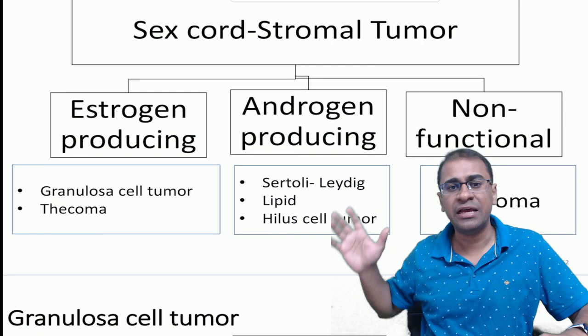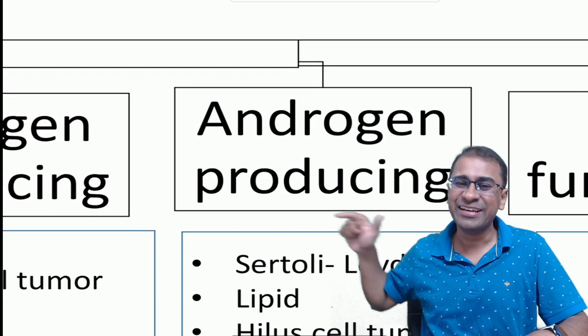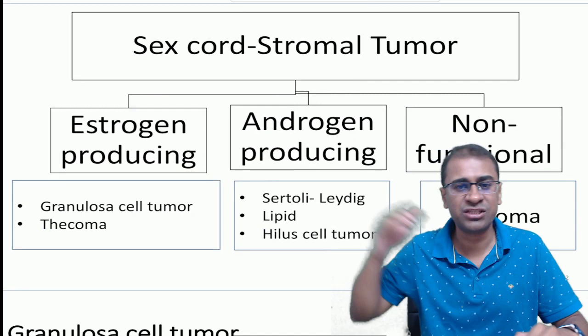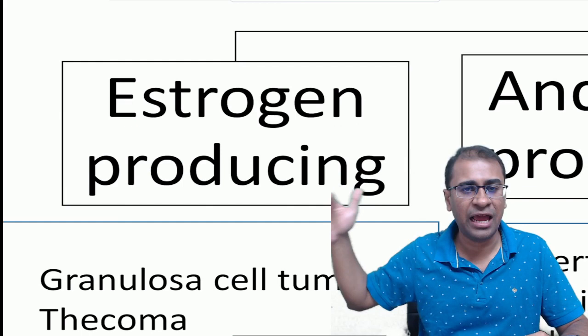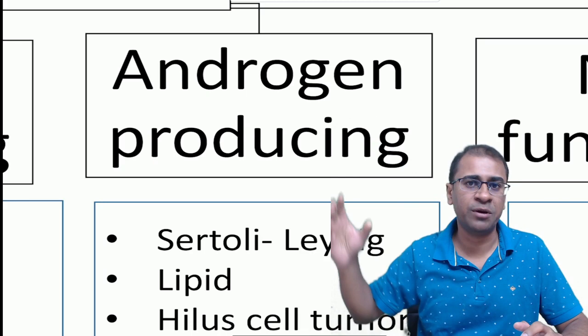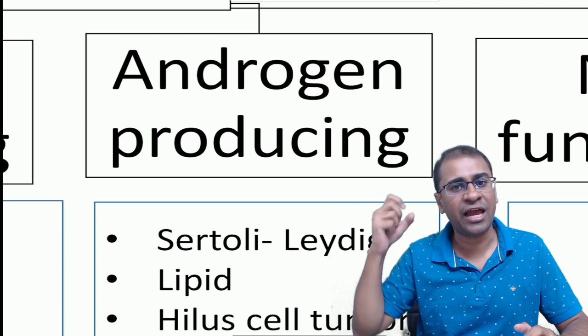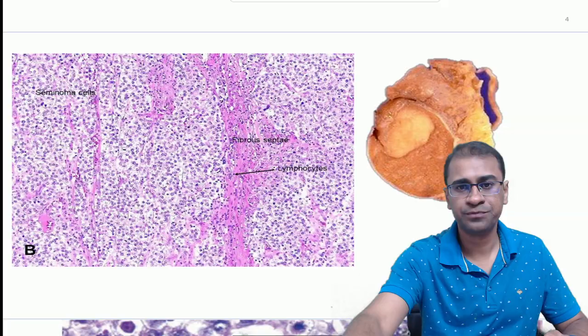The binding feature: estrogen-producing tumors — remember GET — Granulosa cell tumor, thecoma, and Sertoli cell tumor — and these will behave like feminizing tumors causing precocious puberty, endometrial hyperplasia, and endometrial carcinoma. But the androgen-producing tumor, including Sertoli-Leydig and hilus cell tumor, will behave like a defeminizing or masculinizing tumor causing clitoral enlargement, breast atrophy, hirsutism, male-like voice, and all the findings seen in androgen-producing tumors.